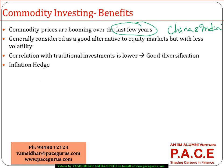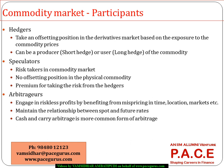Just like any other derivatives market, the commodity derivatives market also has three major groups of investors. The first group is hedgers, whose intention is to reduce exposure to risk. There are two major categories of hedgers: one is the sellers or producers of the commodity.